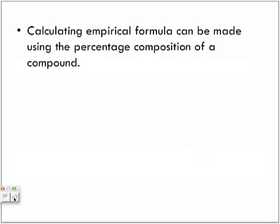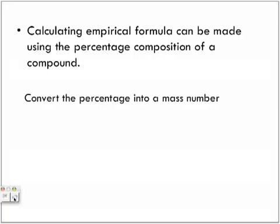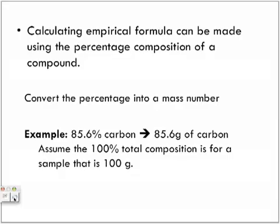Calculating the empirical formula can be done using the percentage composition of a compound. Convert the percentage into a mass number — if you have x percent of the compound, treat it as if it's that many grams. For example, 85.6% carbon becomes 85.6 grams. We take the full total of 100% and treat it as a 100-gram sample, because that's all we need to find the actual formula.